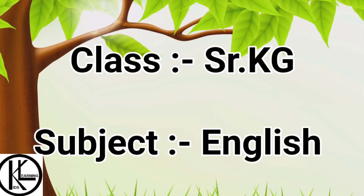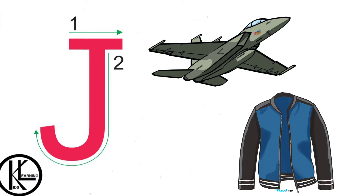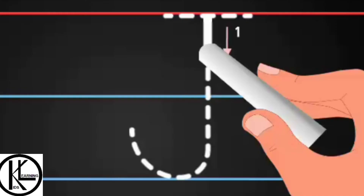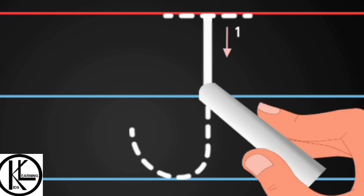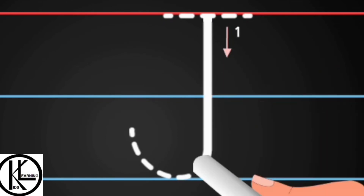Assalamu alaikum kids, let's continue our capital letters. This is letter J. J says 'j j', jacket. And J is for jet. Now let's see how to write letter J. First we have to make a standing line and then you have to make a sleeping line like this.